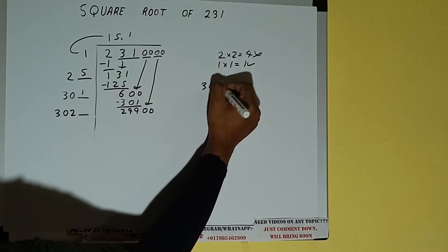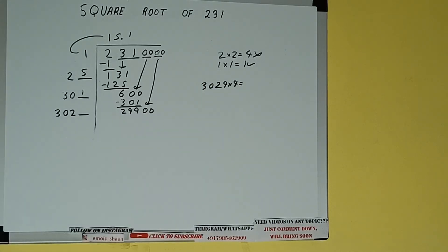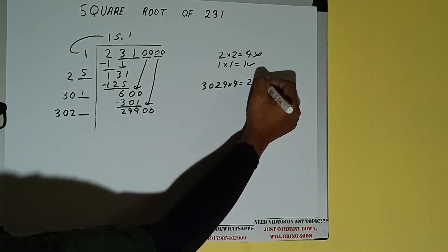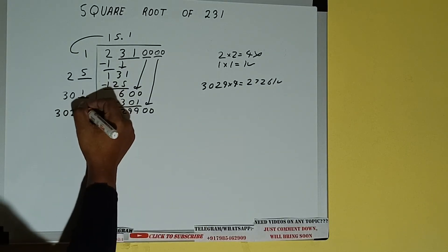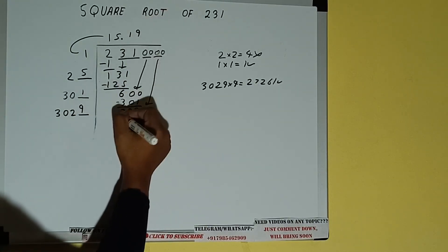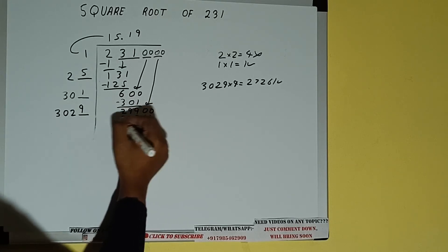3029 into 9 we can try, and we'll be getting 27,261, which is good to take. So 9 here and 9 here. 27,261 subtract.